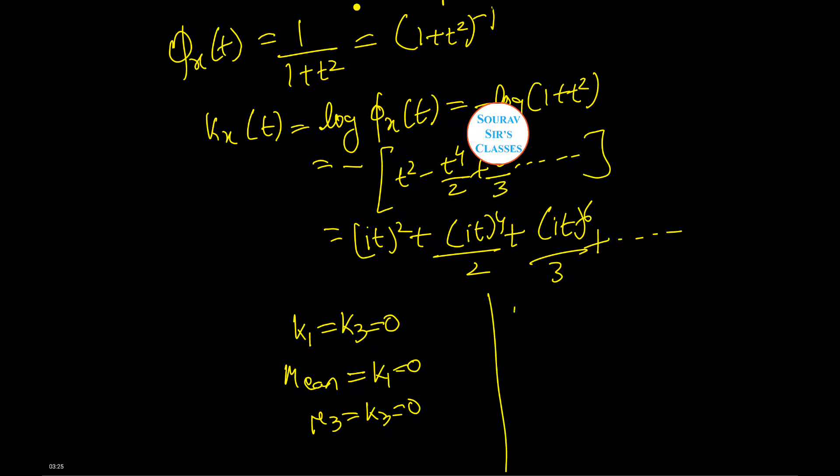Similarly, k₂ equals to 2, k₄ equals to 4 times 3, which is equal to 12. Variance equals to μ₂, which is equal to k₂ equals 2.